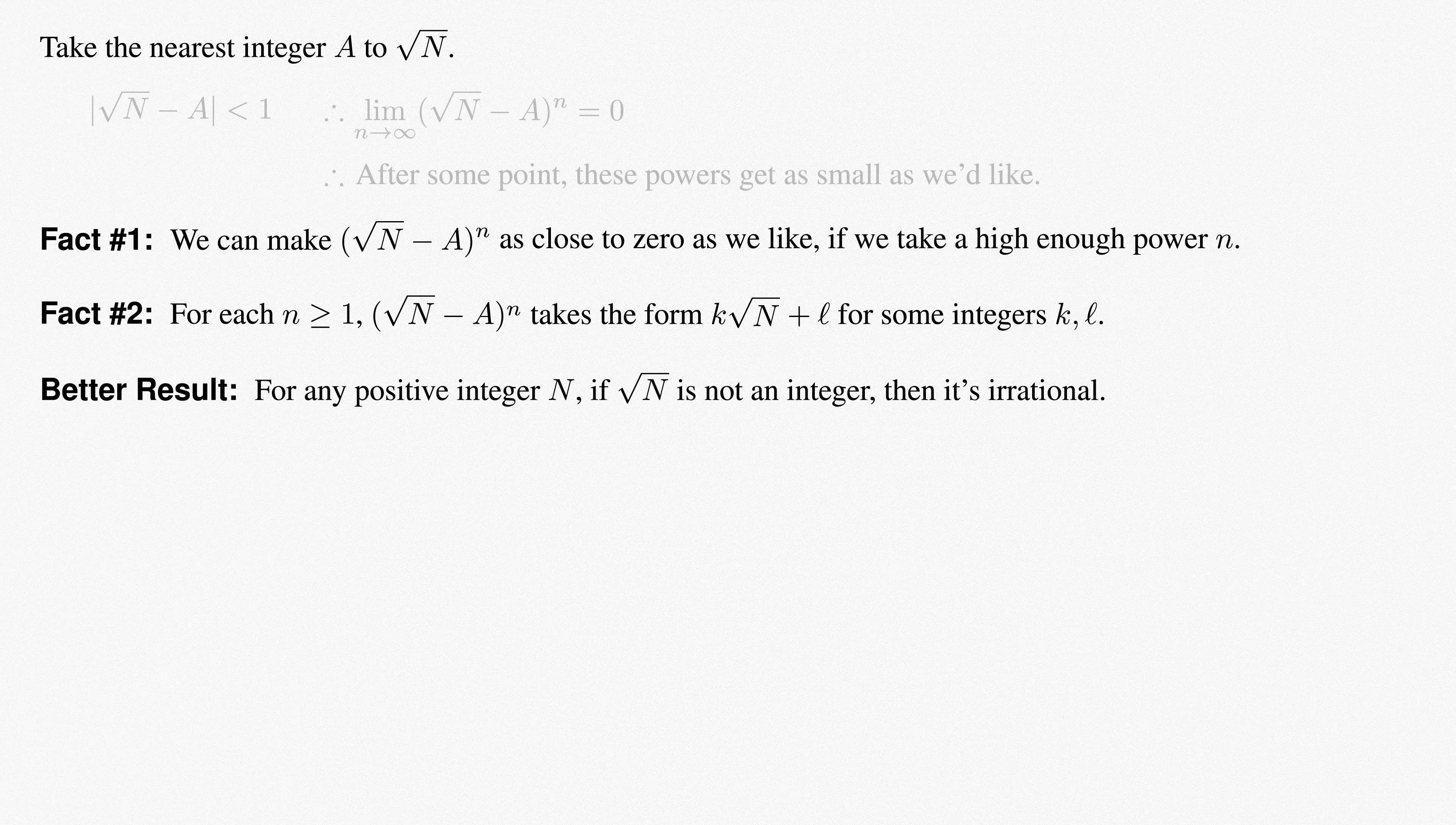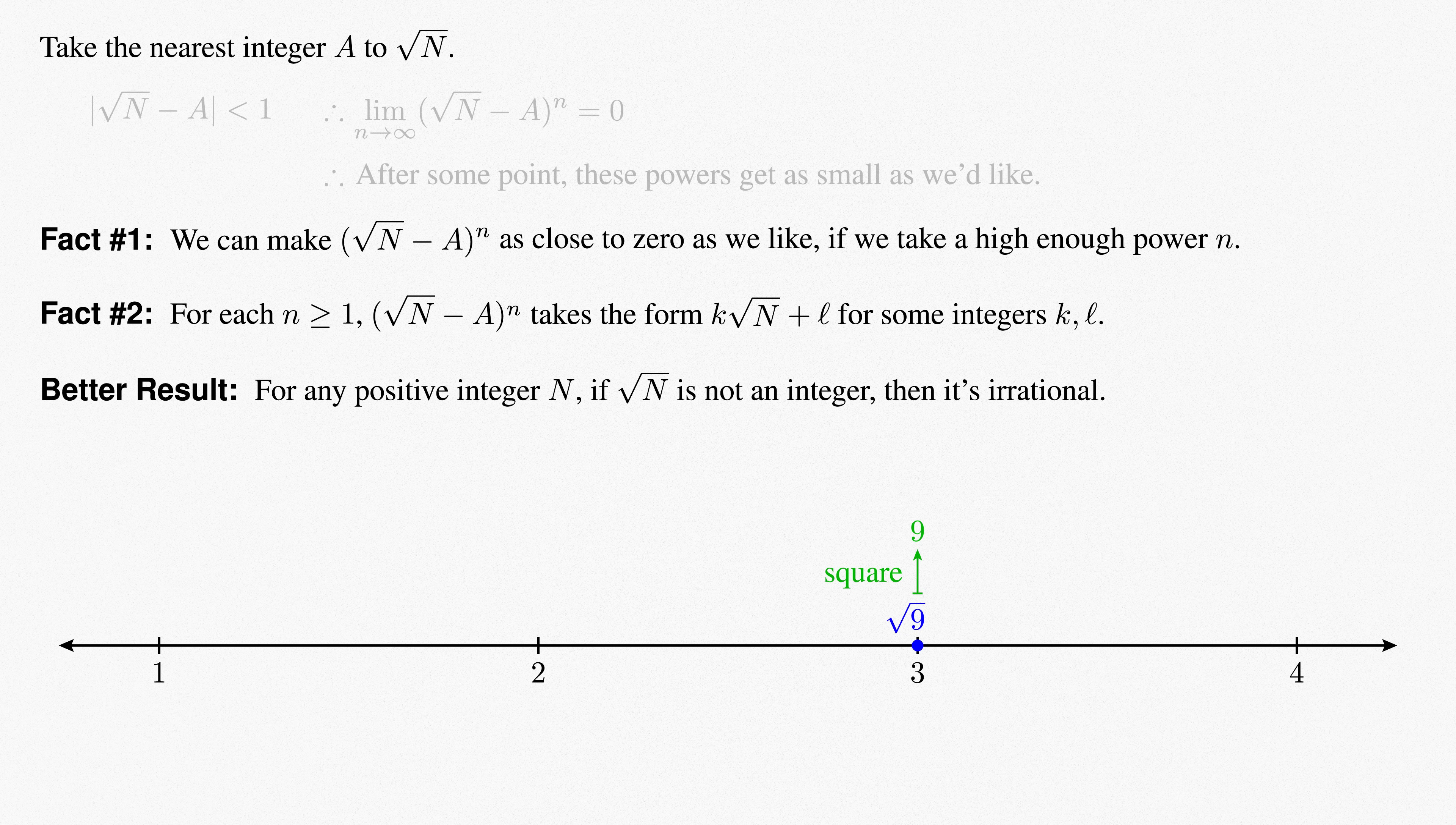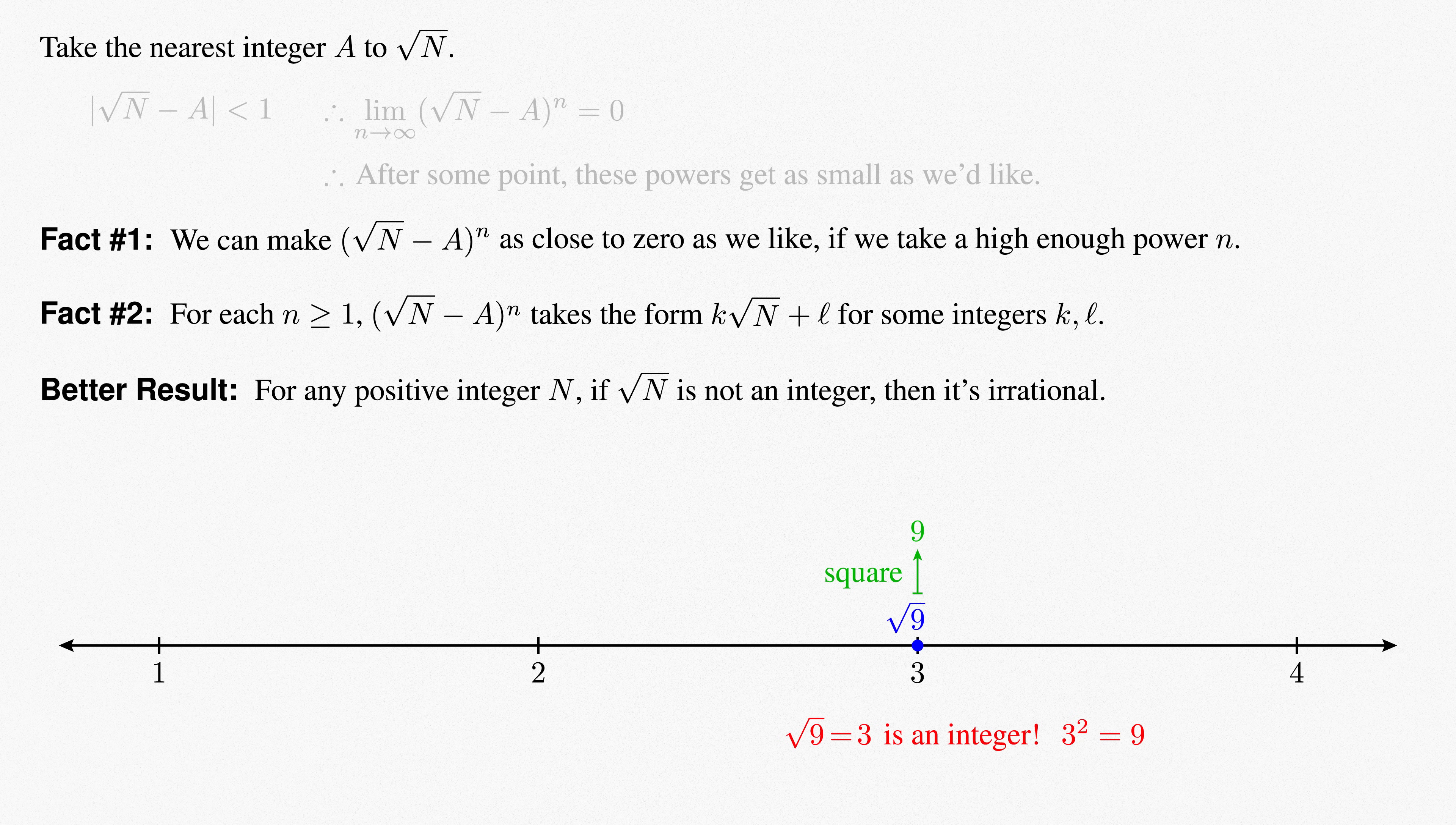All that's left are the obvious square roots. If root 9 were rational, then it would have to be an integer. Which it is! Root 9 equals 3, because 3 squared equals 9. All that we have to do is check the nearest whole number.